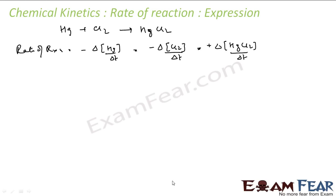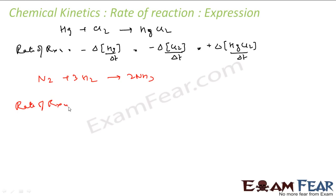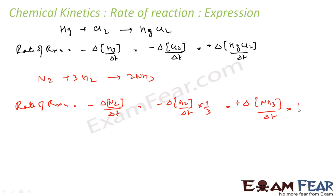Now let's consider another reaction: N₂ + 3H₂ → 2NH₃. Here the stoichiometric coefficients of reactants and products are not the same. In this case, the rate of disappearance of any reactant or the rate of appearance of a product has to be divided by its stoichiometric coefficient. So the rate of reaction is: minus of (ΔN₂/Δt), minus one-third of (ΔH₂/Δt), plus one-half of (ΔNH₃/Δt).